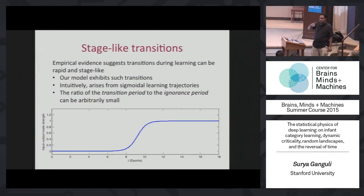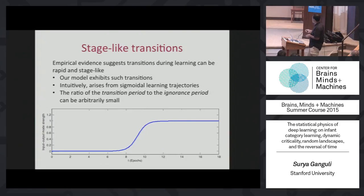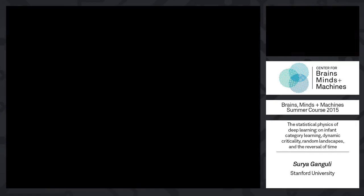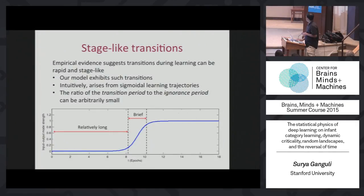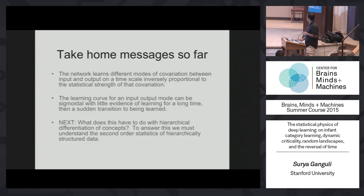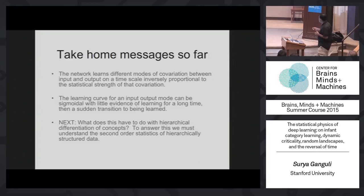When we train neural networks we see plateaus in performance where the network does nothing and then suddenly drops. You can see very sharp transitions in learning, and the ratio of the transition period to the ignorance period can be arbitrarily small. Infants also seem to show these developmental transitions. The take-home message is: the network learns different modes of covariation between input and output on a time scale inversely proportional to the statistical strength of that covariation, and you can get sudden transitions in learning.